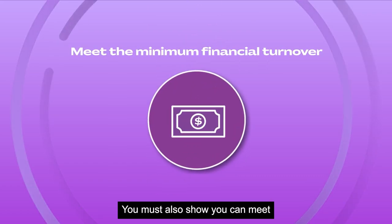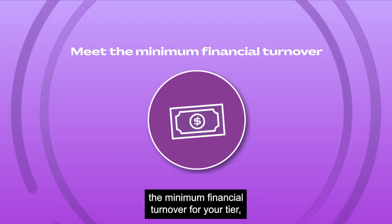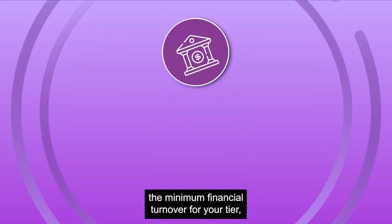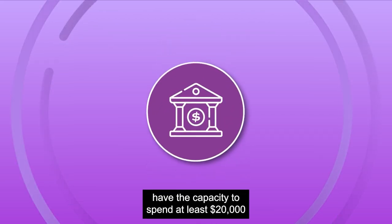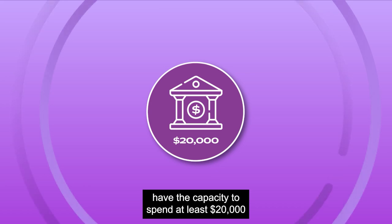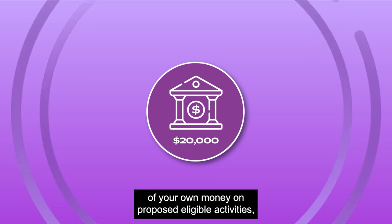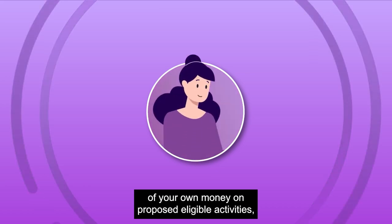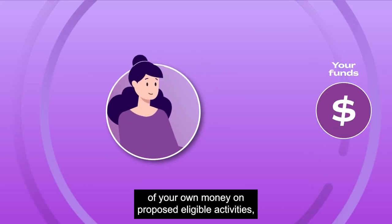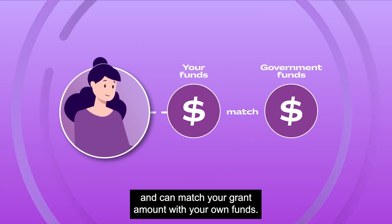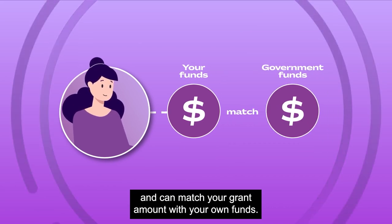You must also show you can meet the minimum financial turnover for your tier, have the capacity to spend at least $20,000 of your own money on proposed eligible activities, and can match your grant amount with your own funds.